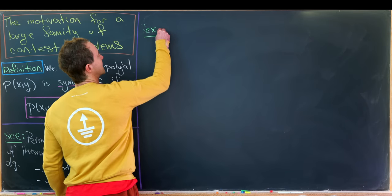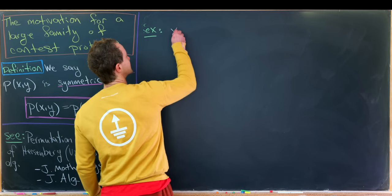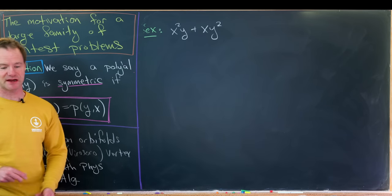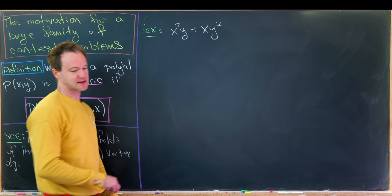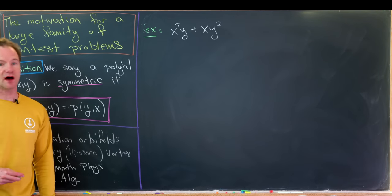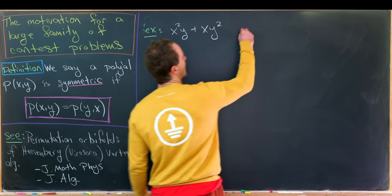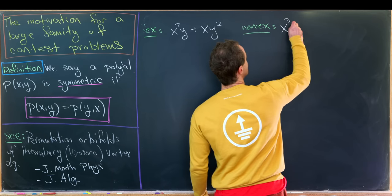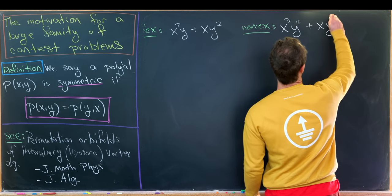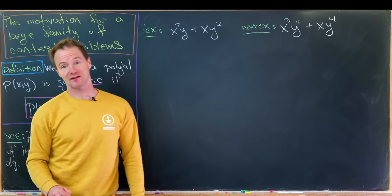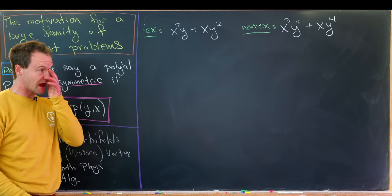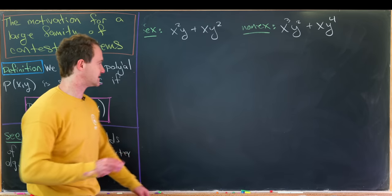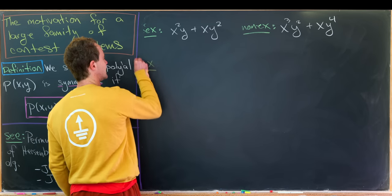Let's look at examples and non-examples of symmetric polynomials. x squared times y plus x times y squared is most definitely symmetric — swapping x and y gives the same thing due to commutativity. A non-example: x cubed y squared plus x times y to the fourth is most definitely not symmetric. Now we're going to build up to a fairly general result in this setup, starting with a little example.